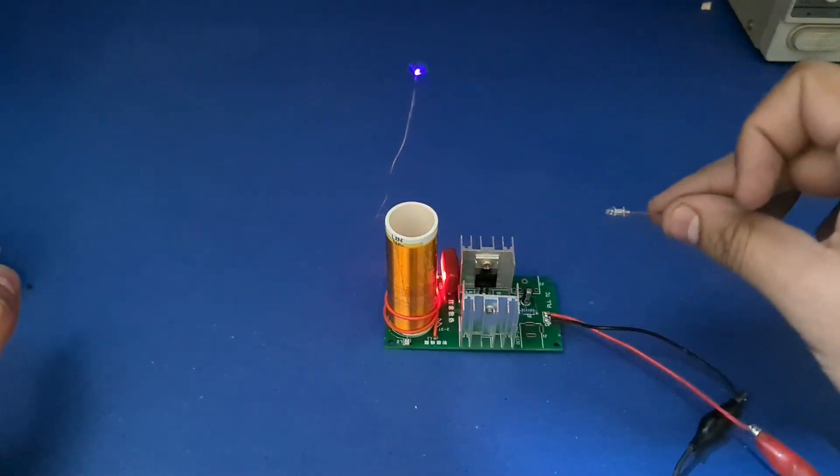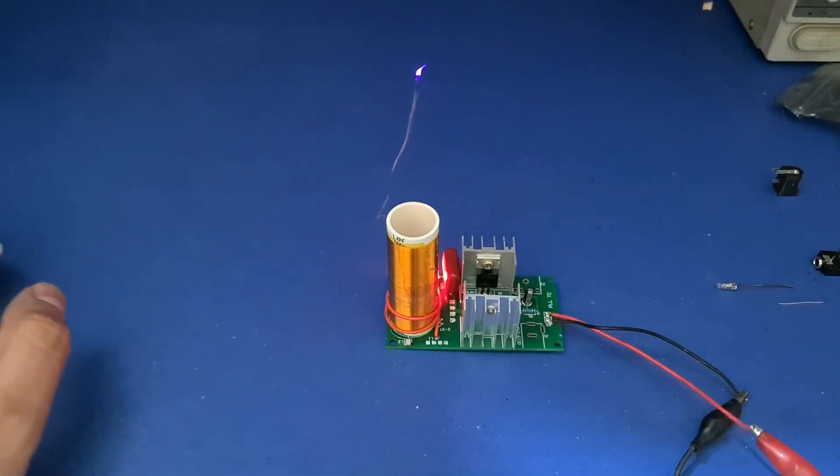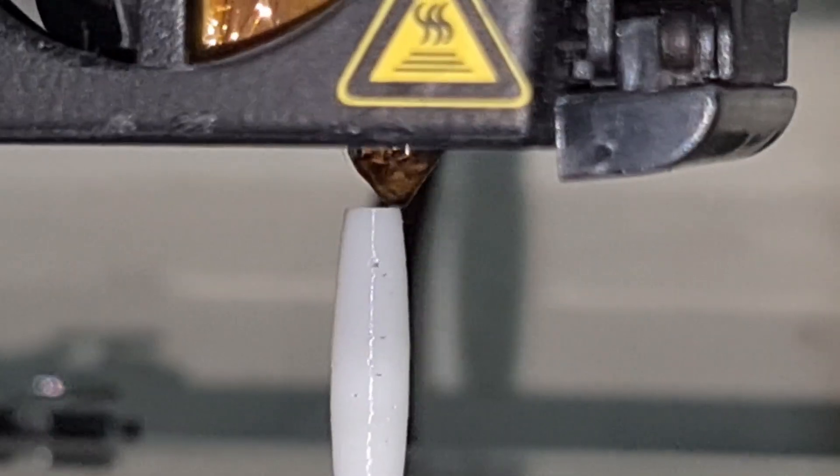Now we're going to do some fun stuff with this Tesla coil. Let's 3D print two little rockets and try to propel them using this Tesla coil.